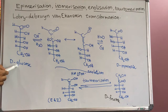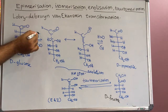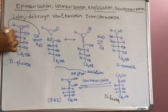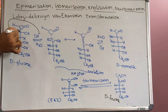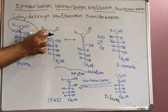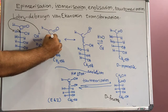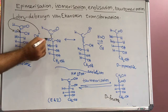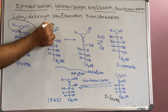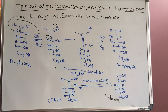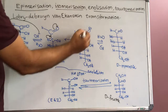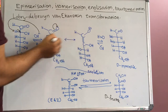This is the D-glucose open chain structure. In basic medium, the OH⁻ will take this hydrogen and it will be deprotonated, then here this carbon will get a negative charge. The negative charge is delocalized with this lone pair, and next the negative charge will be shifted toward the more electronegative oxygen atom, where it will get the negative charge and form a double bond.